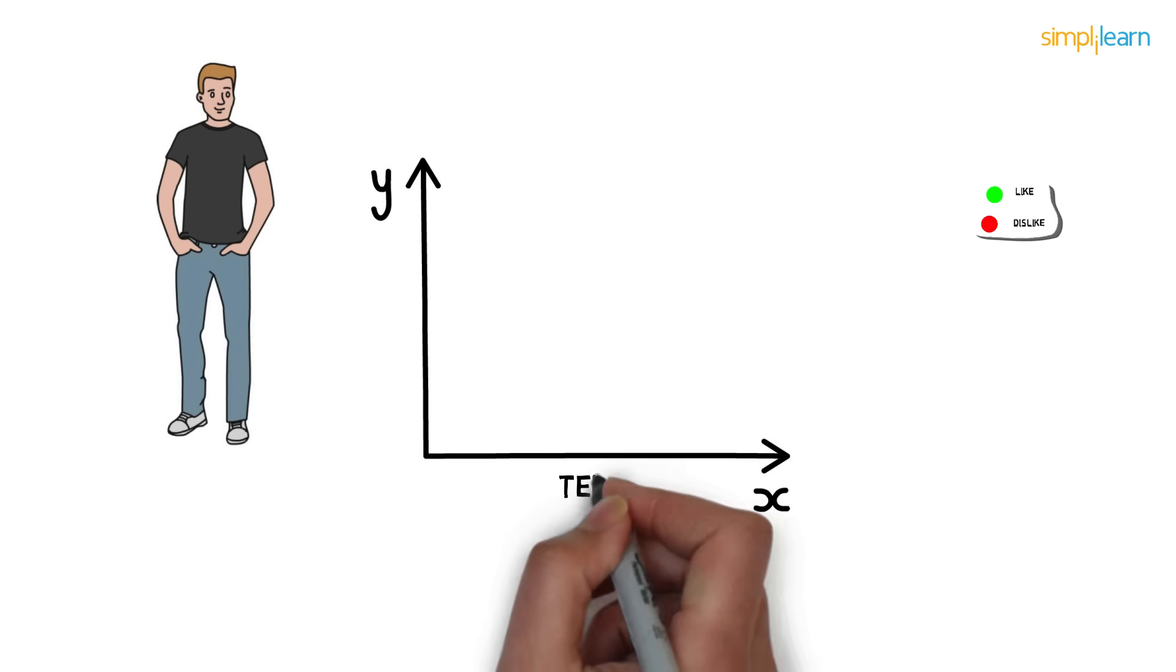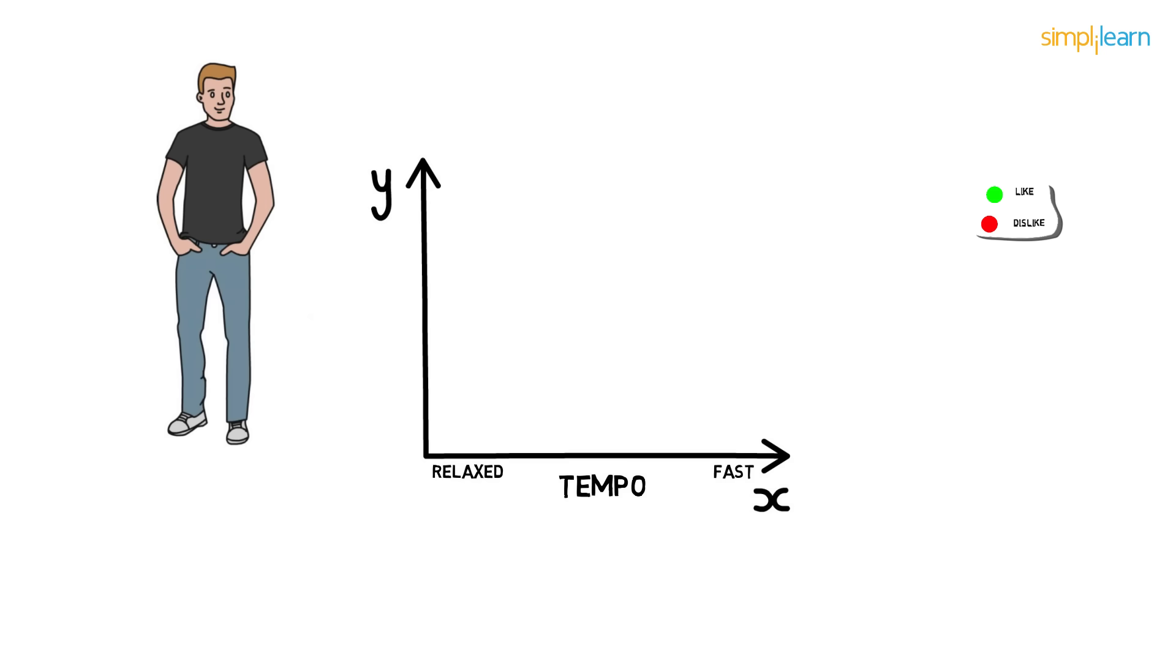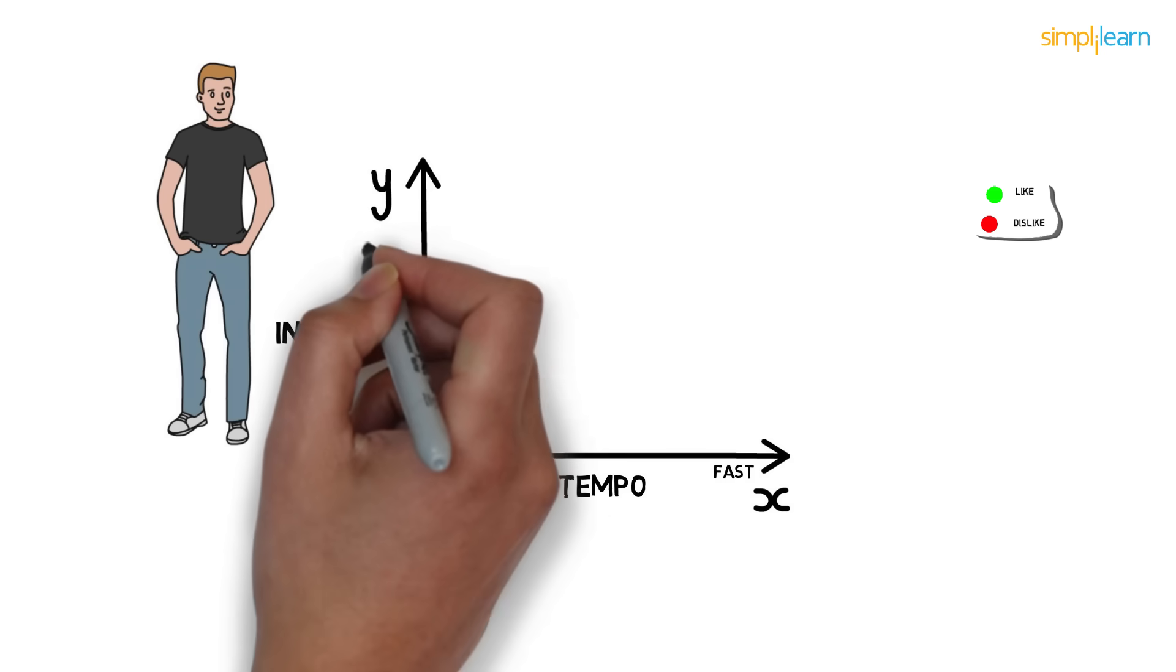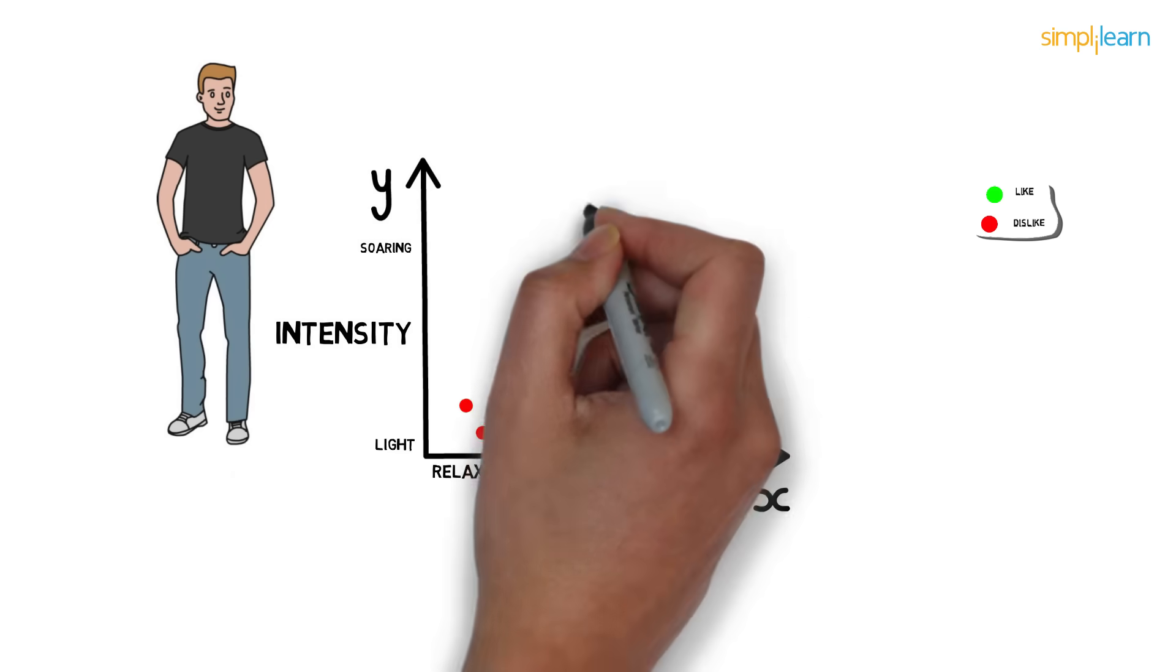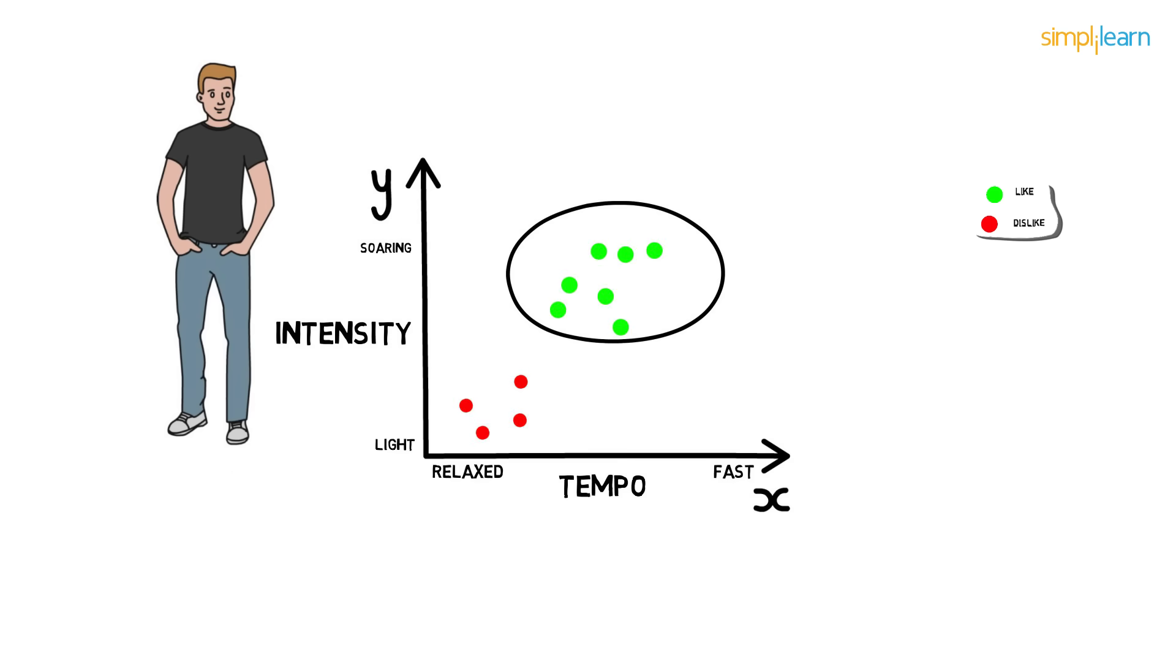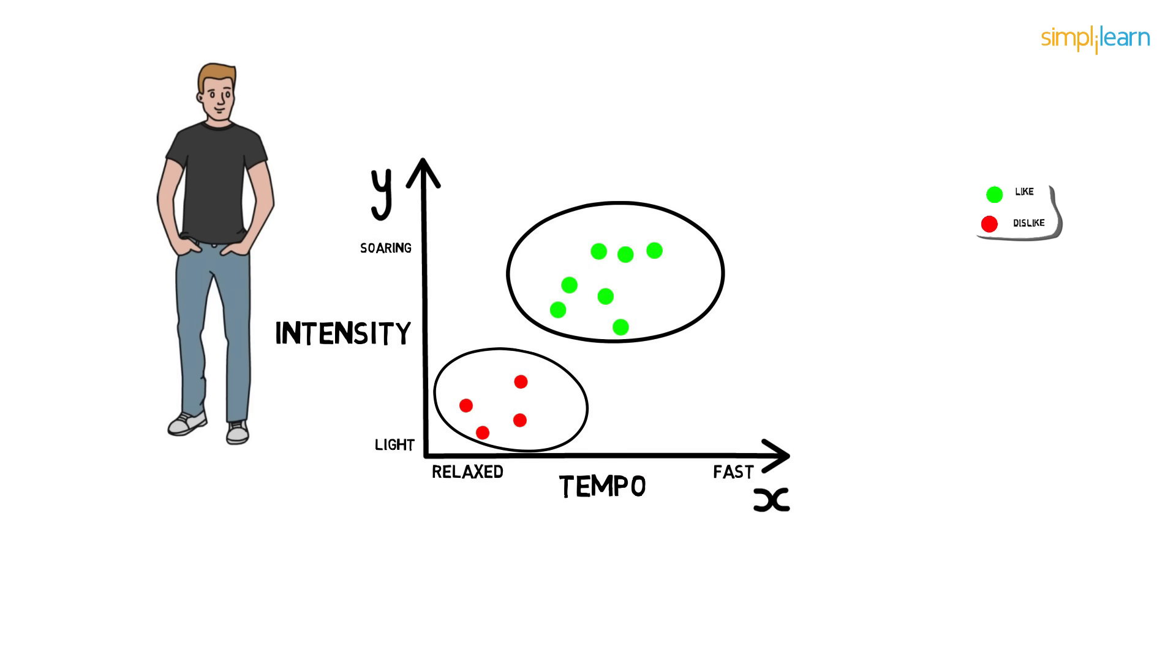So here, tempo is on the x-axis, ranging from relaxed to fast, whereas intensity is on the y-axis, ranging from light to soaring. We see that Paul likes the song with fast tempo and soaring intensity, while he dislikes the song with relaxed tempo and light intensity. So now we know Paul's choices.